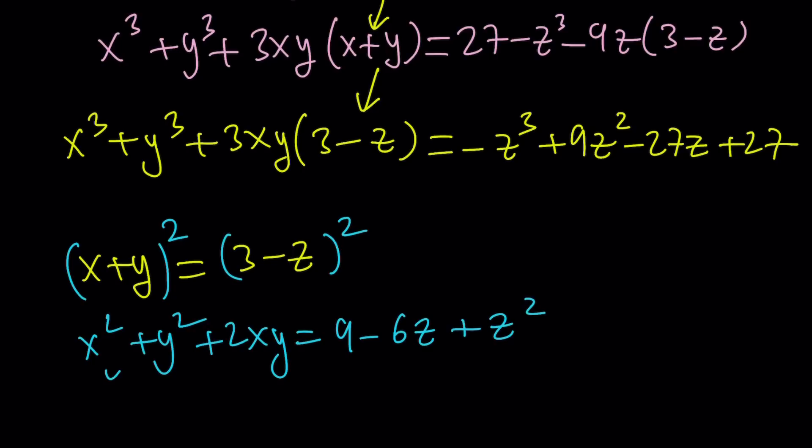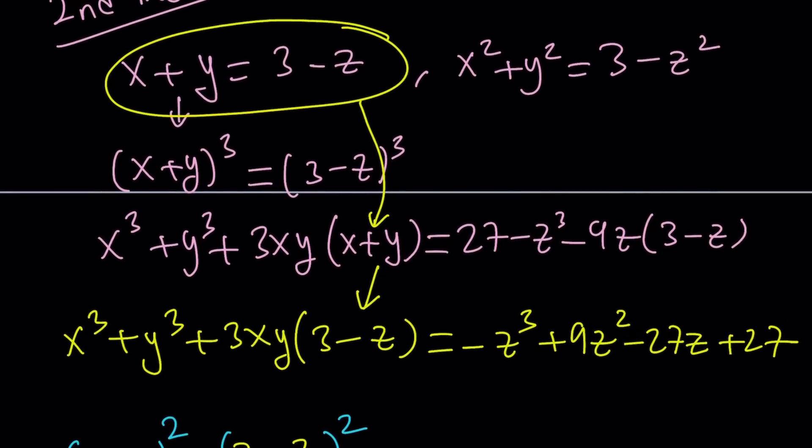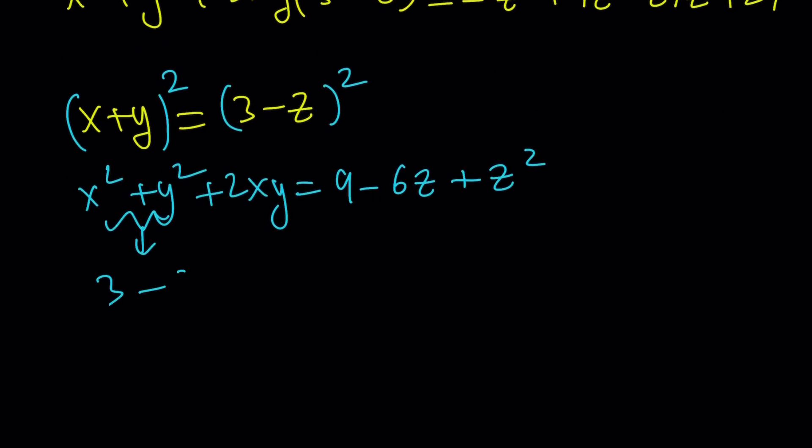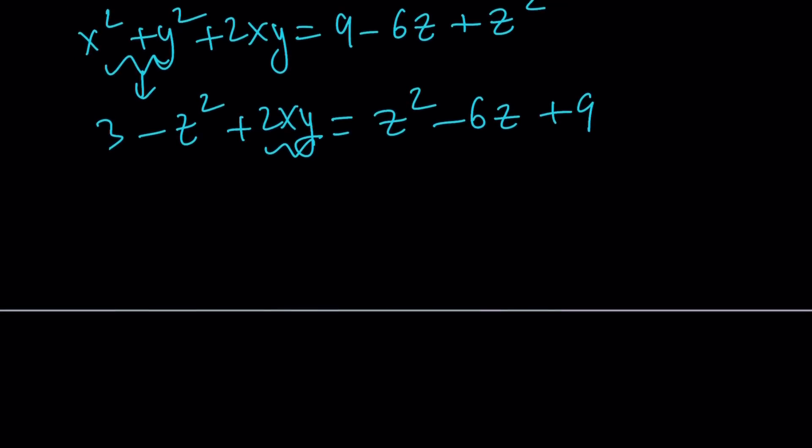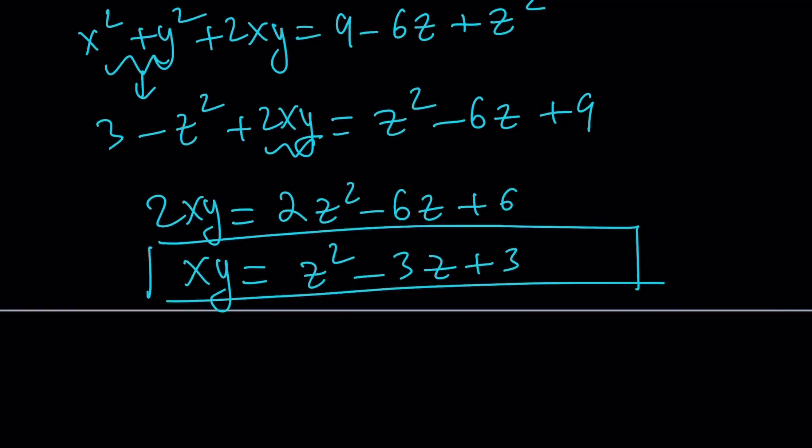Remember, x squared plus y squared can be written as 3 minus z squared. Replace this with 3 minus z squared. We don't know what xy is, so leave it. The right hand side is z squared minus 6z plus 9. From here we can solve for xy. 2xy equals 2z squared minus 6z plus 6. Divide everything by 2: xy equals z squared minus 3z plus 3.